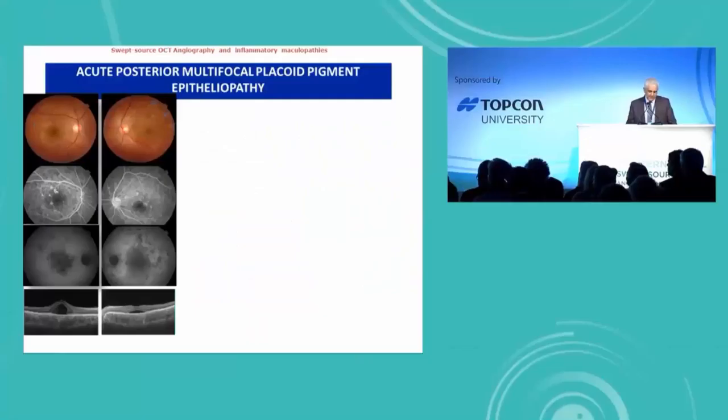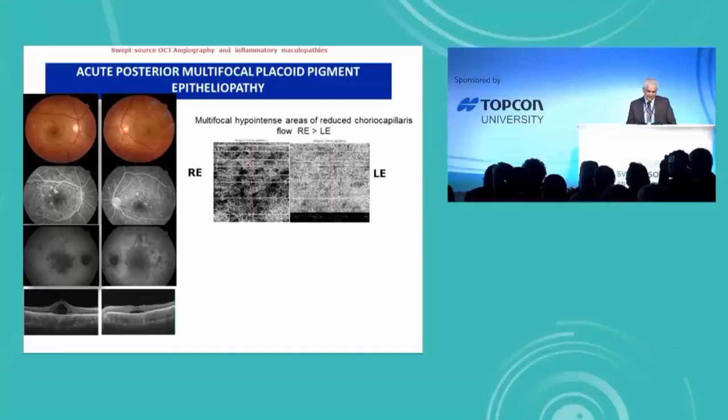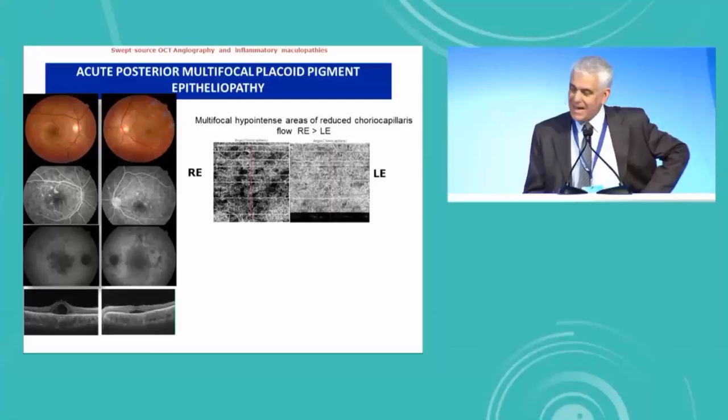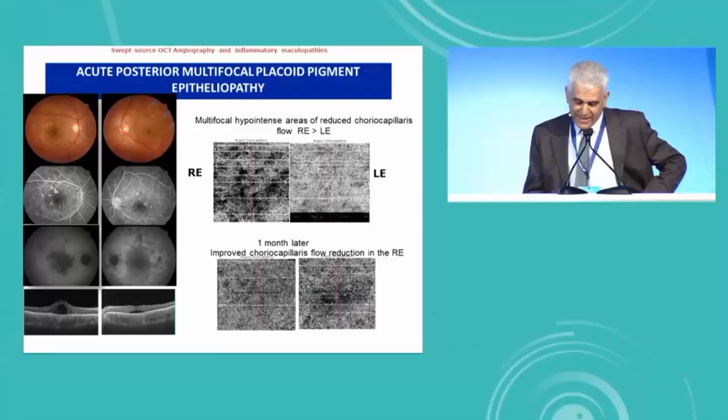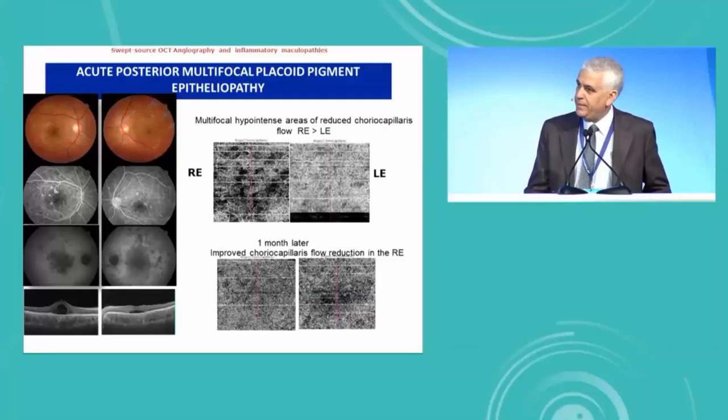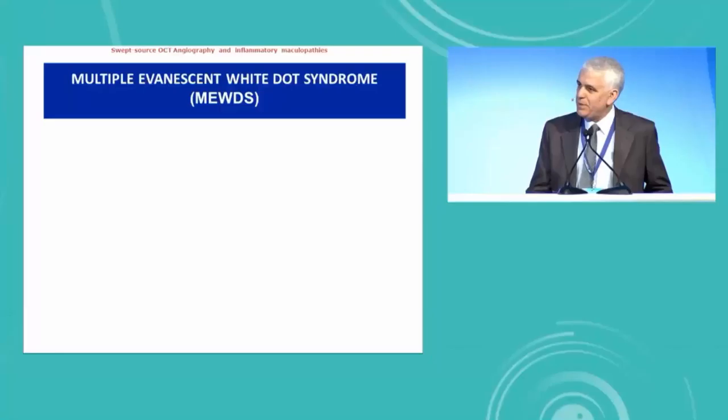The second case is a case of APMPPE. You can see multifocal hypointense areas of reduced choriocapillaries flow mainly in the right eye. One month later, you can see the improved choriocapillaries flow reduction in the right eye.